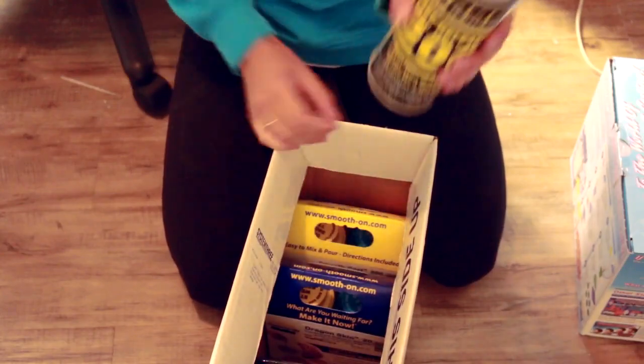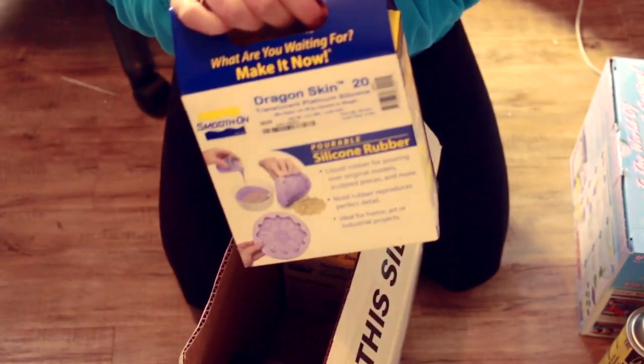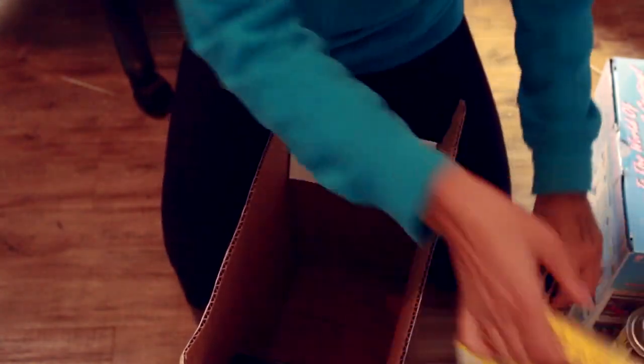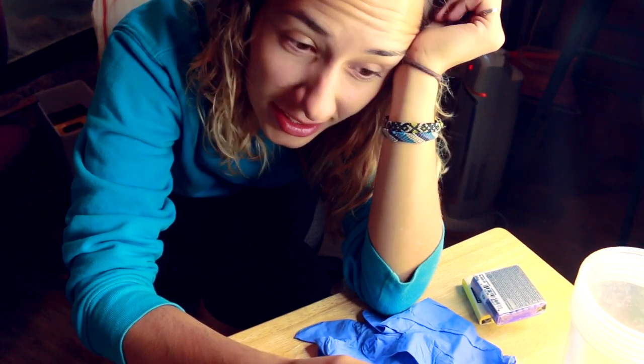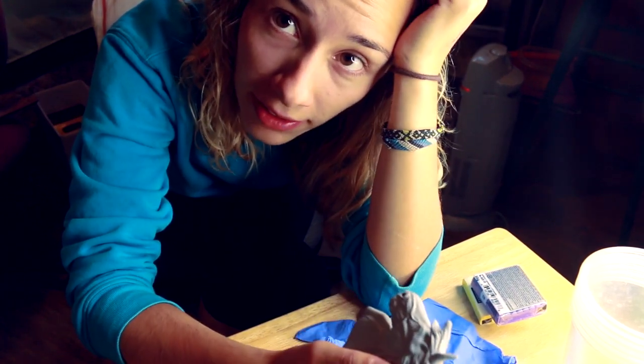What's in the box is Ease Release 200, Dragon Skin, which is different silicone, and the same Smoothcast so I have two things of Smoothcast. I'm gonna use the crappy casting silicone to just test it because I really don't know how this is gonna go.